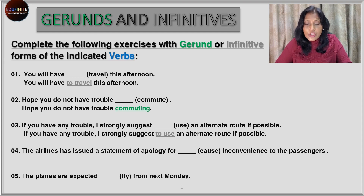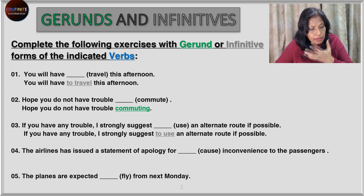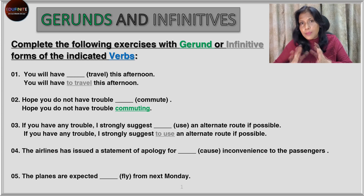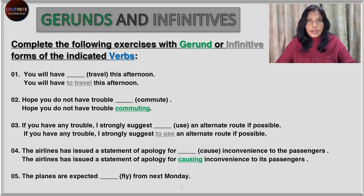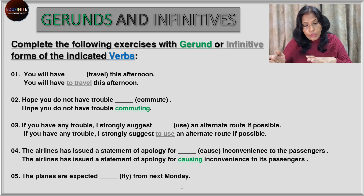If you have any trouble, I strongly suggest to use an alternate route if possible — we have used the infinitive form of the verb 'use'. The word here is 'suggest'. Some verbs like agree, decide, expect, hesitate, neglect, and suggest usually take the infinitive form of the verb and not the gerund form. Next: the airline has issued a statement of apology for causing the inconvenience to its passengers. Here 'for' is the preposition, and gerunds only function as the object of a preposition, so the object of preposition 'for' is 'causing' — it's the gerund.